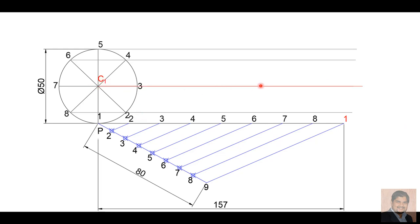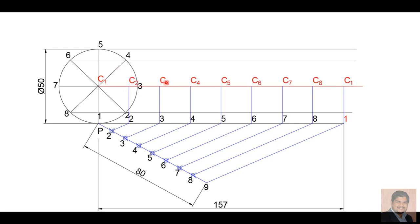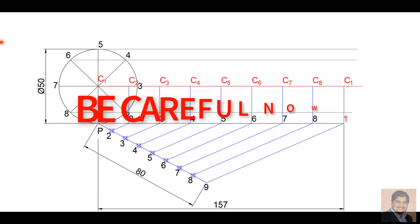I will name the circle center C1. This red line will be the locus of the center — whenever the circle is rotating, the center will always be on this line. From each path division point, I draw a vertical line up to the locus of the center. Point 2 on the path corresponds to center C2, similarly C3, C4, C5, C6, C7, C8. At the last position the circle returns to its initial position, so C1 is at the end.